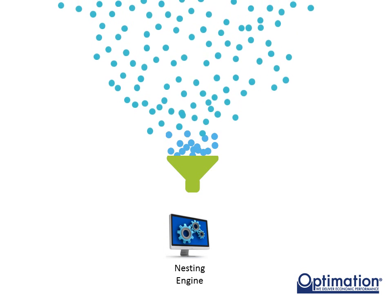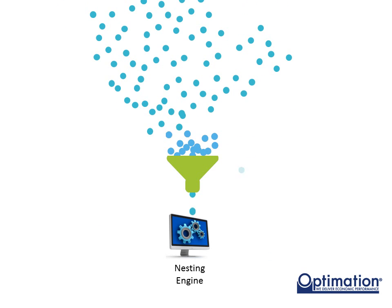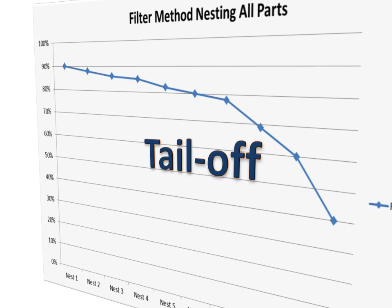Another more fundamental issue is the static nature of some filters. If a nesting system uses the same static filter across more than one nest, then the pool of parts will decrease each time a nest is made until either the parts run out or the filter criteria is changed to let in more parts. This can lead us right back to the tail-off situation we're trying to avoid.